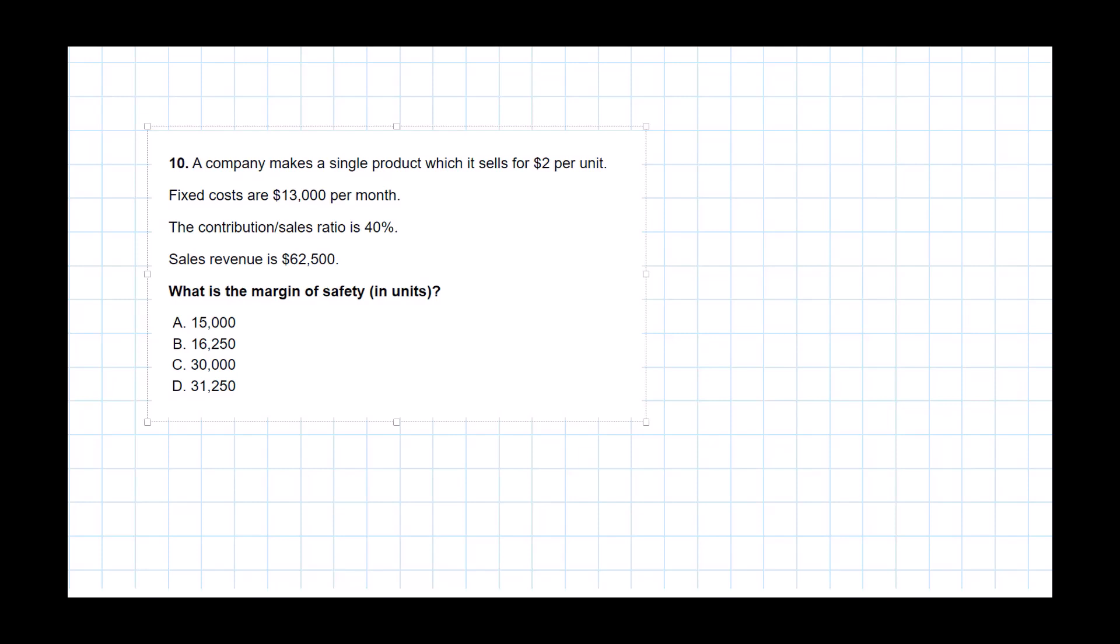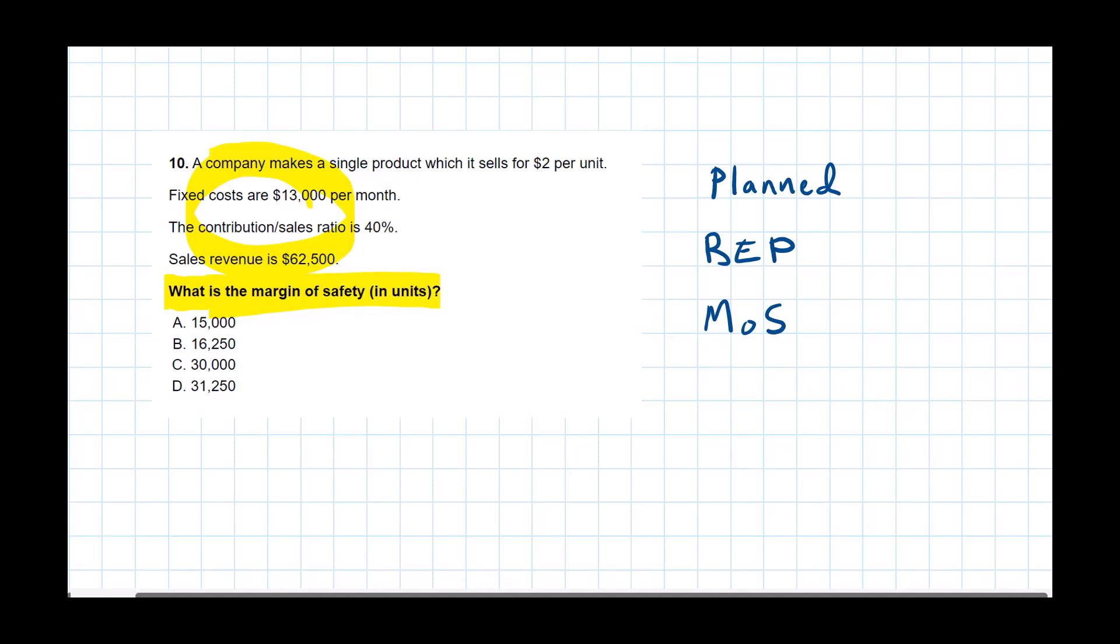Welcome back. First thing that I do, I read this requirement and I see they would like us to calculate the margin of safety. So before I go into the little story and look at all of the details, I'm going to recall that formula and write it on scratch paper. So I know that the margin of safety is the difference between some budgeted or planned activity level. And then from that we subtract a break-even point. And the difference then is the margin of safety, which I will abbreviate here MOS.